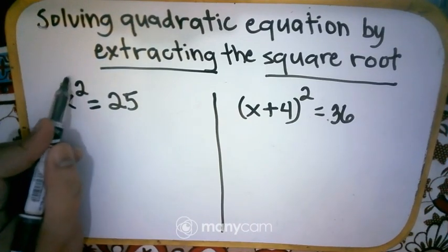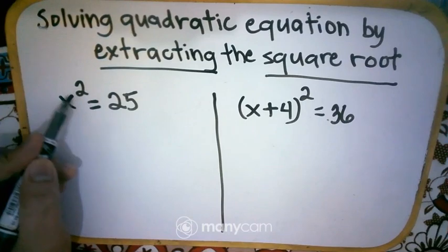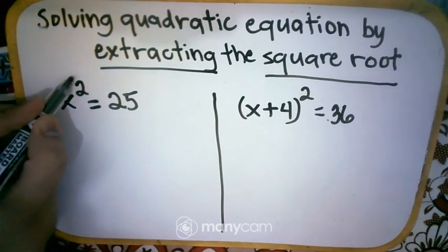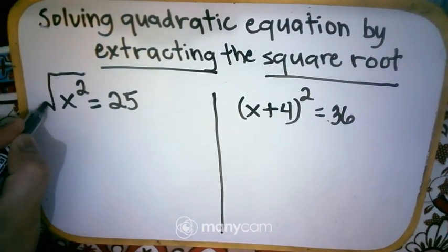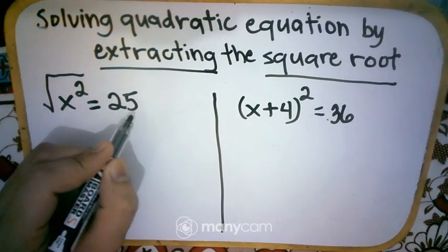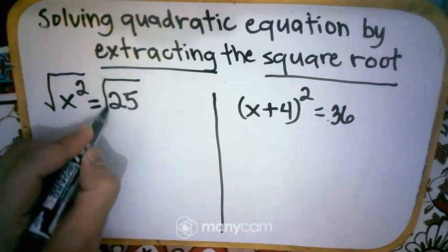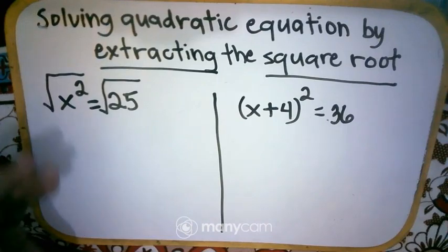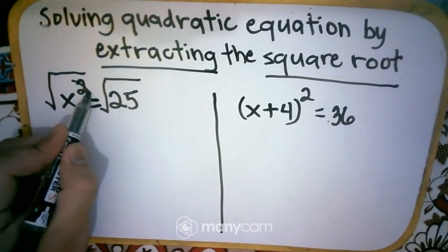The variable is not yet alone, so we need to remove the 2. So how are we going to remove 2 again? We're going to put a radical sign or square root, do it to the left, do it to the right. So we're going to put also another square root or radical sign and then cancel the 2.